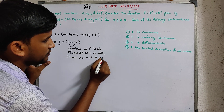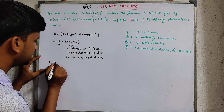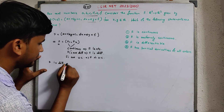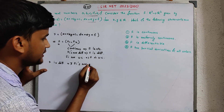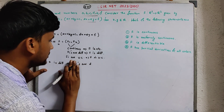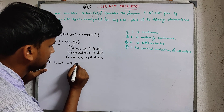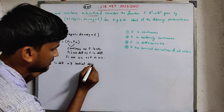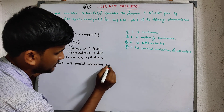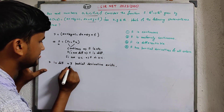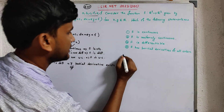We also know that if F is differentiable, then all the partial derivatives of F exist. However, the converse is not true — if all partial derivatives of F exist, we cannot conclude that F is differentiable.